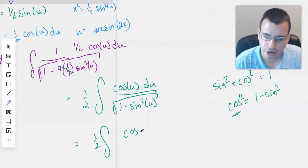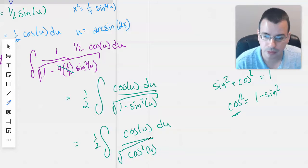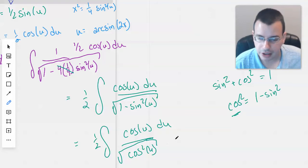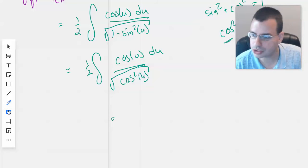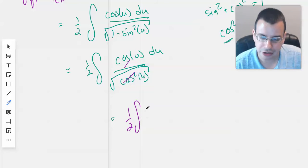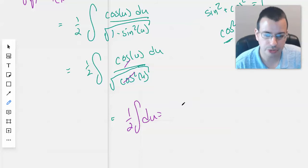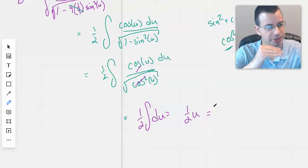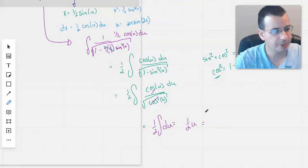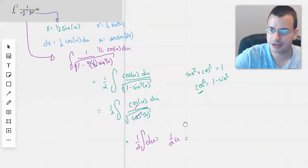So I have one half cosine of u du over cosine squared, square rooted of u. And then simplifying that, the cosine squared, square rooted, will just go to cosine. And then those will cancel. We're left with one half integral du, which will be one half u. And there's usually a plus c, but there's actually limits to the integration. So when we put those back on, this c would end up canceling out. So I'm going to leave off the plus c for now.